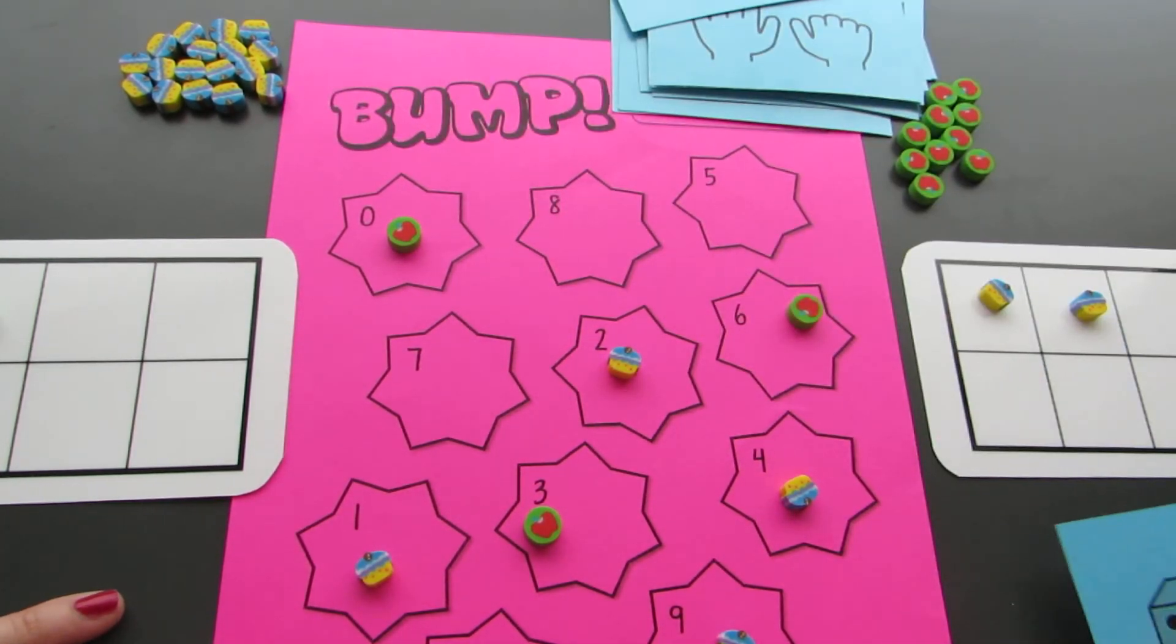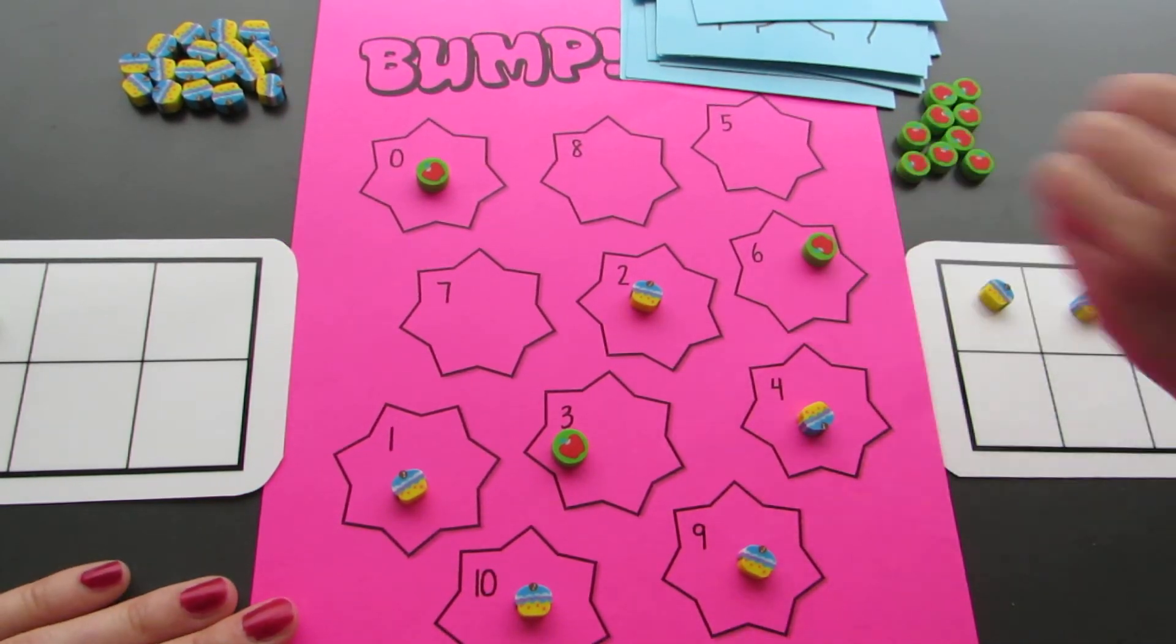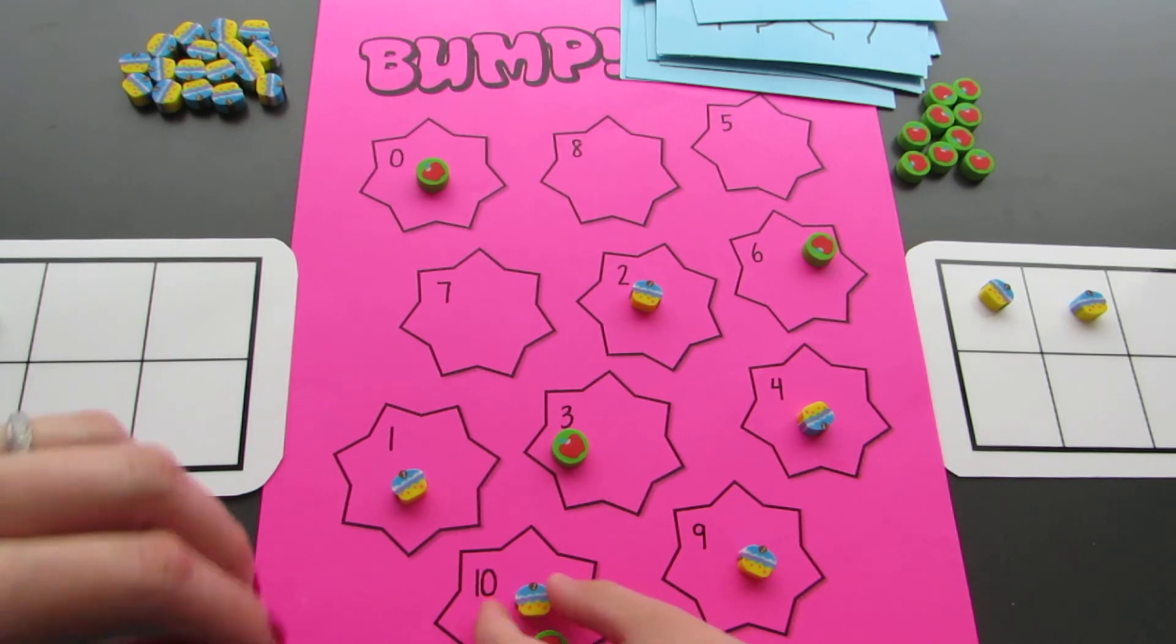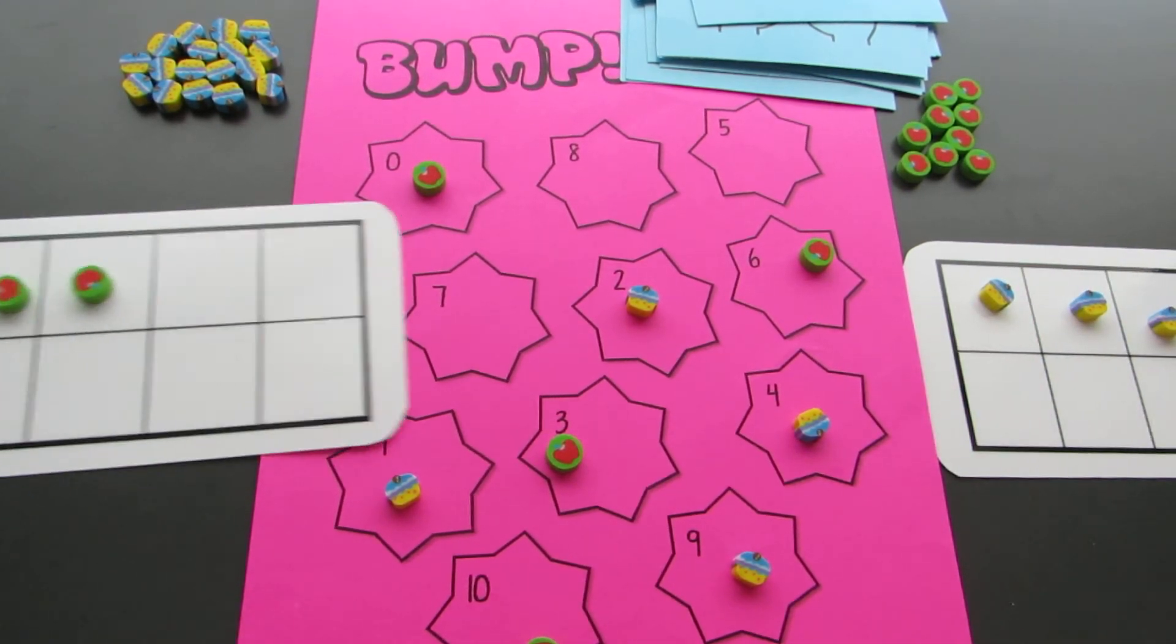What did you get? Ten. You got ten? Oh, my cupcake's on ten. Wait a minute. You got... You have three and I have three.